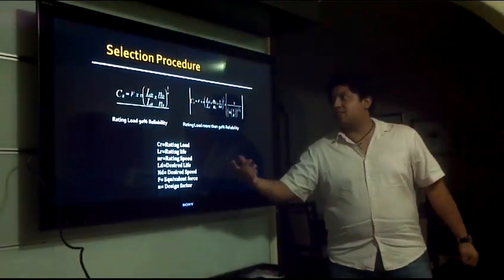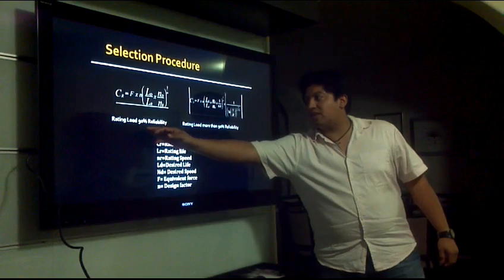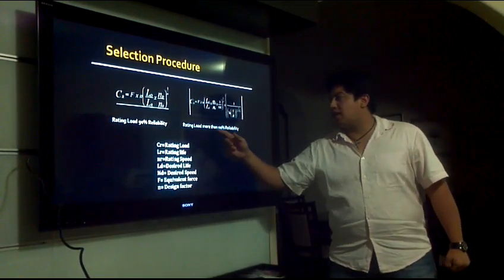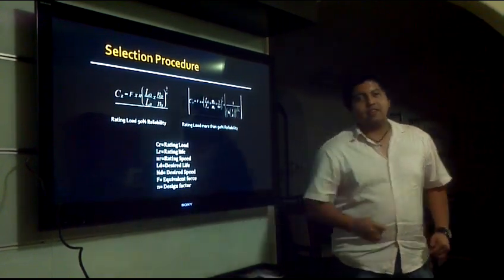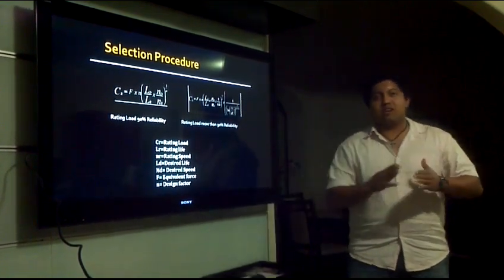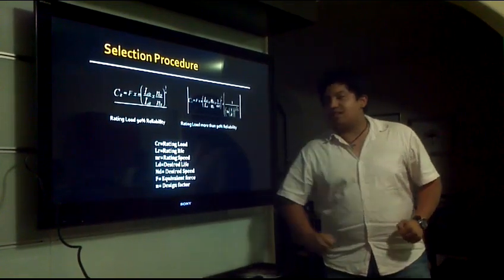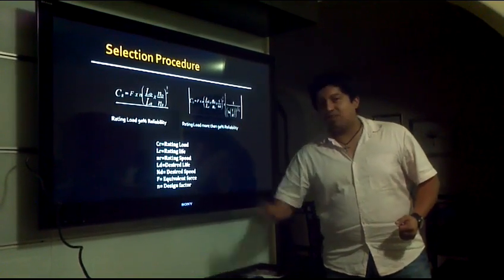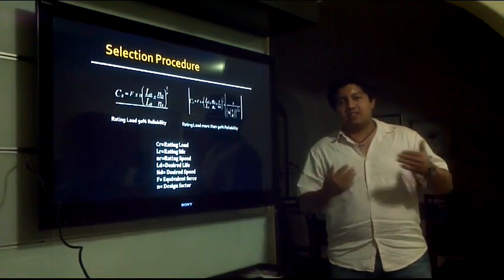Here, for the selection procedure, we have two very important formulas. This one selects the rating load at 90% reliability. This one over here selects the rating load at more than 90% reliability. The rating load is the load that we want to calculate in order to go to the tables and find the appropriate type of bearing that we want to select. The rating life and the speed are the parameters given by the manufacturer. The desired life and the speed are the parameters, the life and the speed that you want your design to achieve.